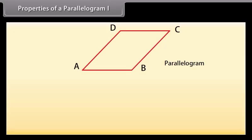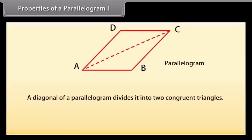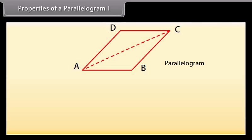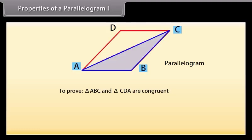Properties of a parallelogram: A diagonal of a parallelogram divides it into two congruent triangles. Let's prove this theorem. Let ABCD be a parallelogram and AC be a diagonal. The diagonal AC divides parallelogram ABCD into two triangles: triangle ABC and triangle CDA. We need to prove that triangle ABC is congruent to triangle CDA.